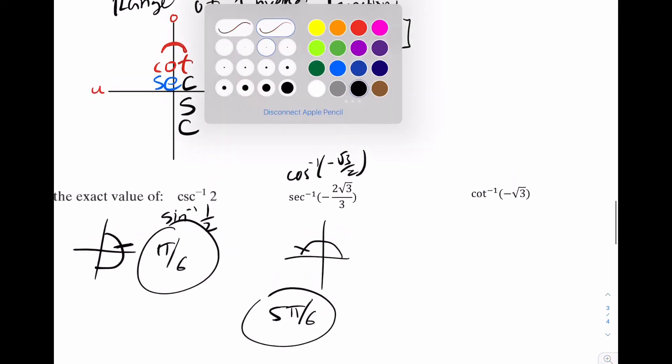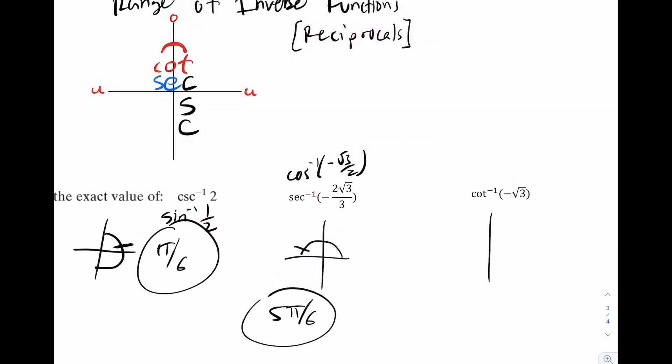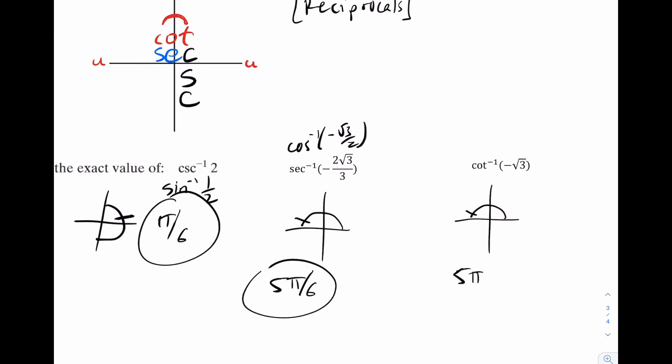So for this one, you can highlight quadrants one and two. And again, some people like to think of it as where does tan hit negative root three over three. But I think for this one, just kind of think through it. You can think about quadrants one and two. Think where does cotangent hit negative root three. That would be right there. So that would be five pi over six again.